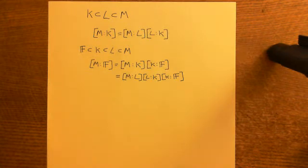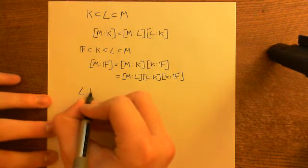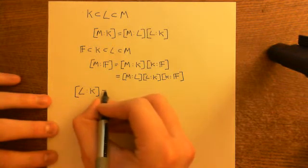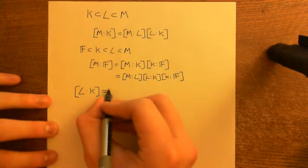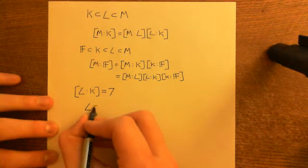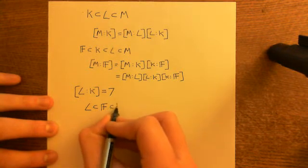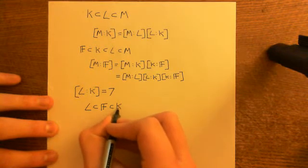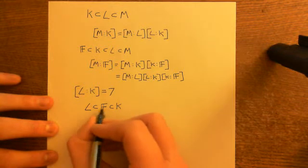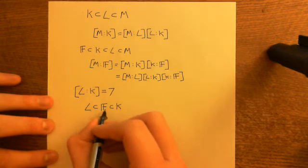Now let's have an example of the power of this. Suppose I have a field extension L over K, and the degree of this field extension is some prime number — to give an example, let's say it's 7. Then my question is: can there exist a field F that sits in between these, i.e. a field that is strictly bigger than K but smaller than L? So it contains K and is bigger than K, but it's smaller than L and contained within L. Can there exist such a field?